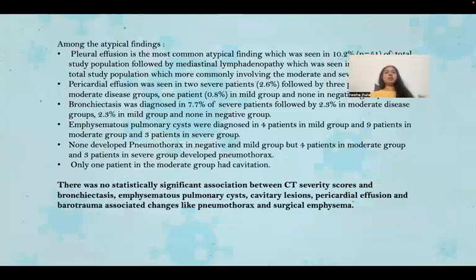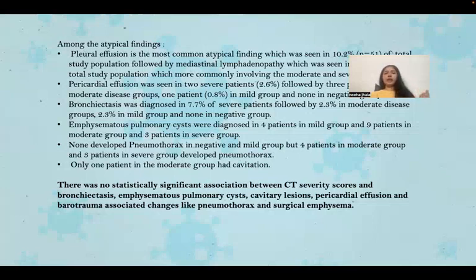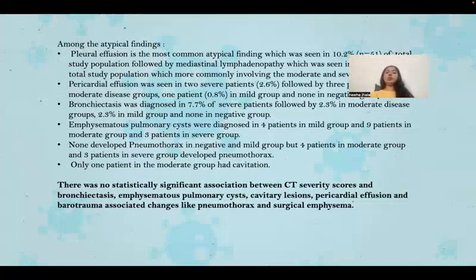Atypical findings include pleural effusion, which is the most common atypical finding, followed by pericardial effusion, bronchiectasis, and emphysematous pulmonary cysts. No patients in the control or mild groups developed pneumothorax, but four patients in the moderate group and three patients in the severe group developed pneumothorax. Only one patient in the moderate group had cavitations.